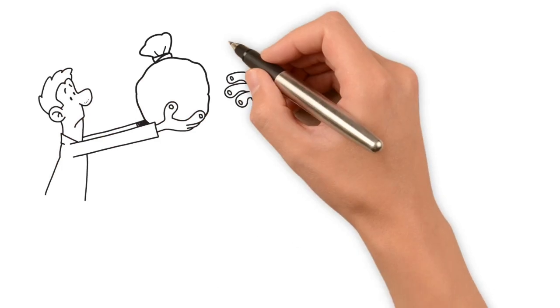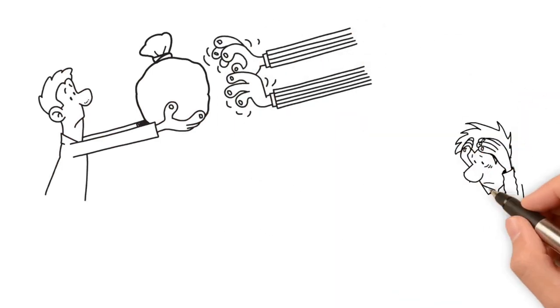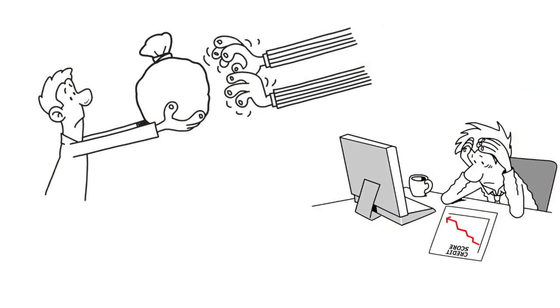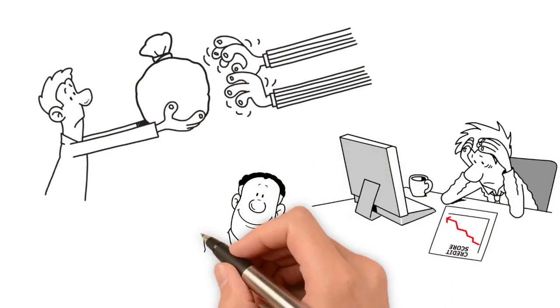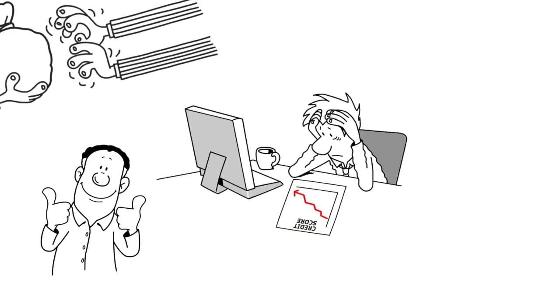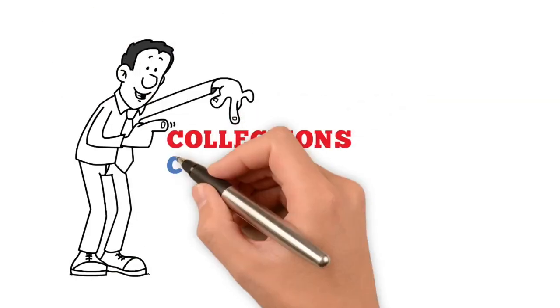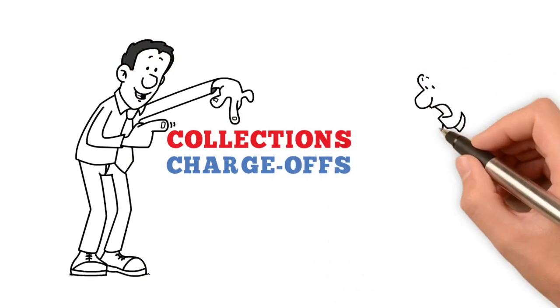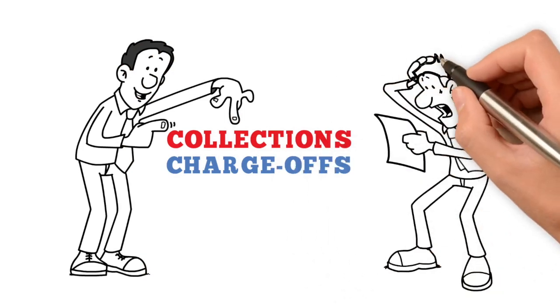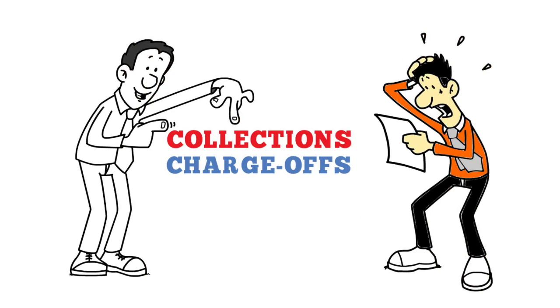Have you ever paid off a collection or charge off account only to have your credit score go down? Well, if so, don't worry, this is actually quite common. You see, collections and charge offs cause the most damage to your credit as soon as they are reported to your credit reports.